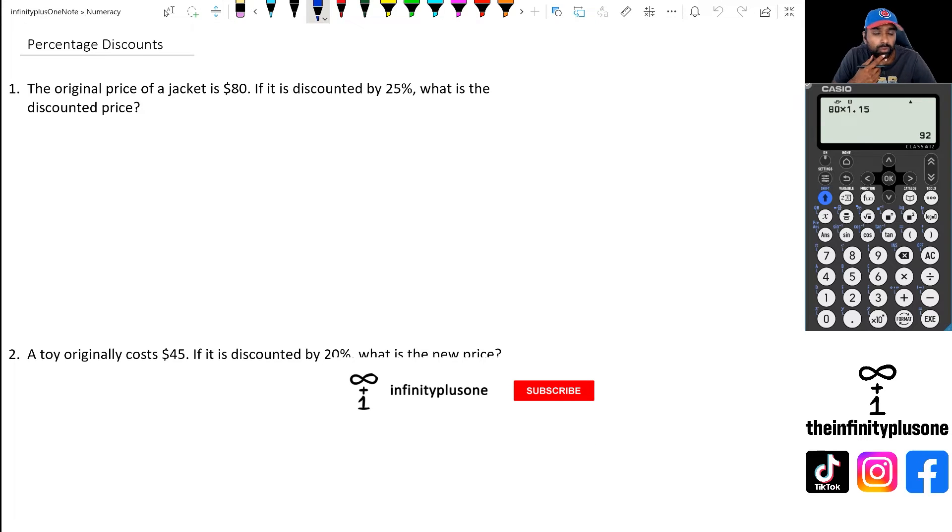Alright, so looking at question one here, we've got a jacket that's priced at $80 and then you've got a discount of 25%. What is the discounted price? So what we need to do is we first need to work out what 25% of 80 is. And once we find that, we subtract it from $80 to figure out what the new price is.